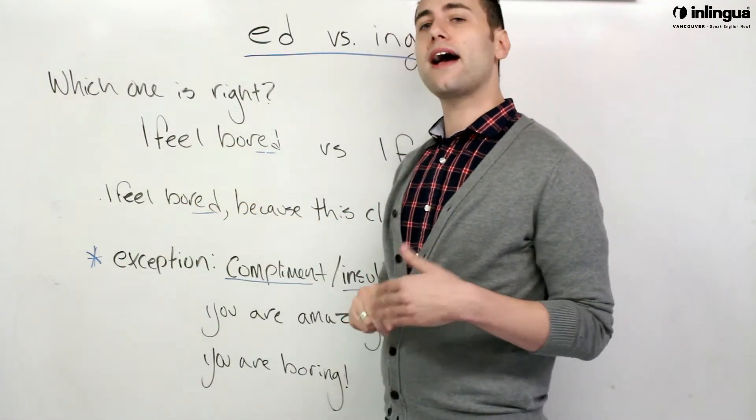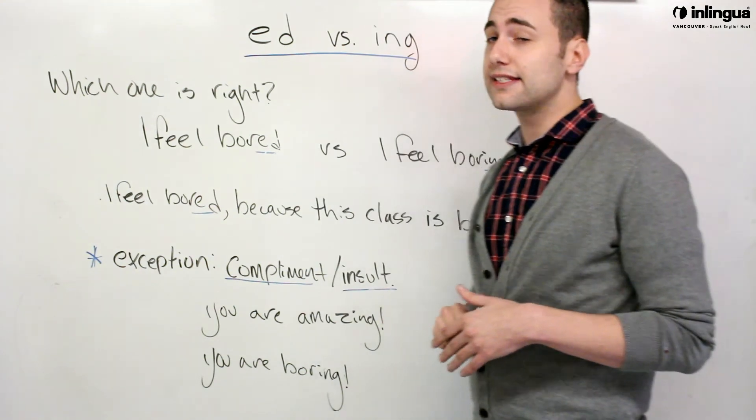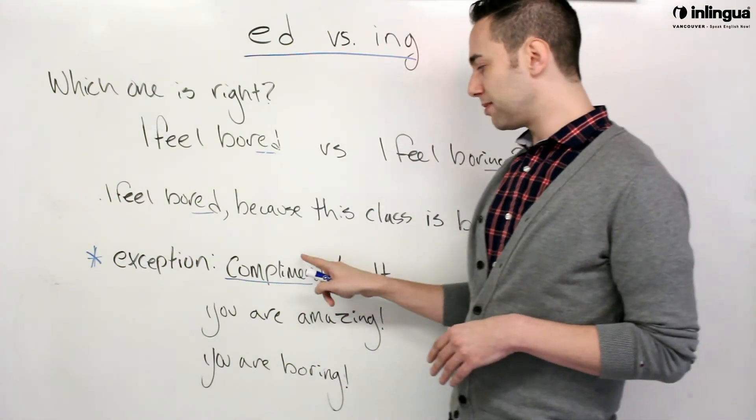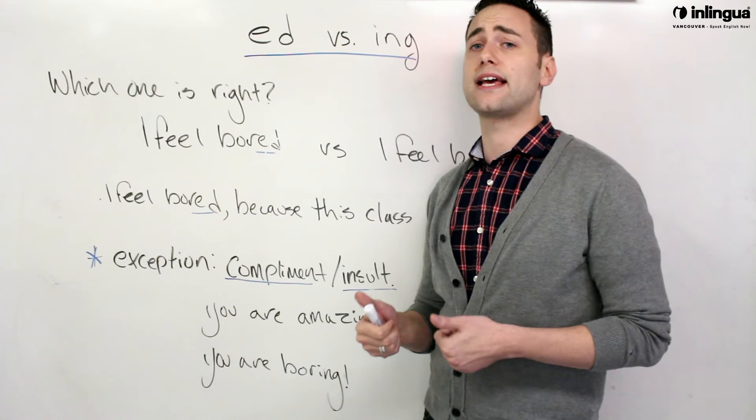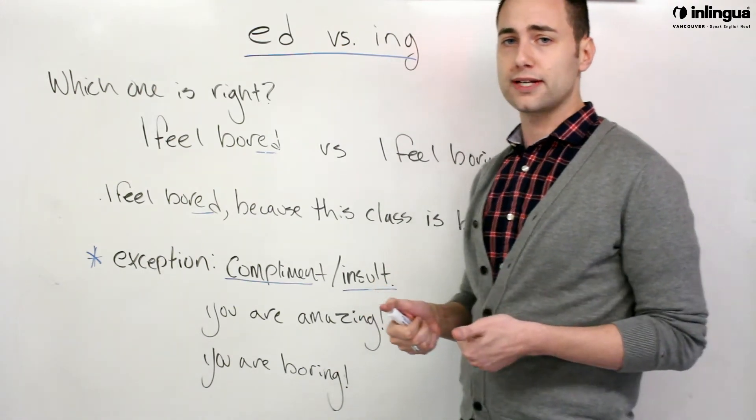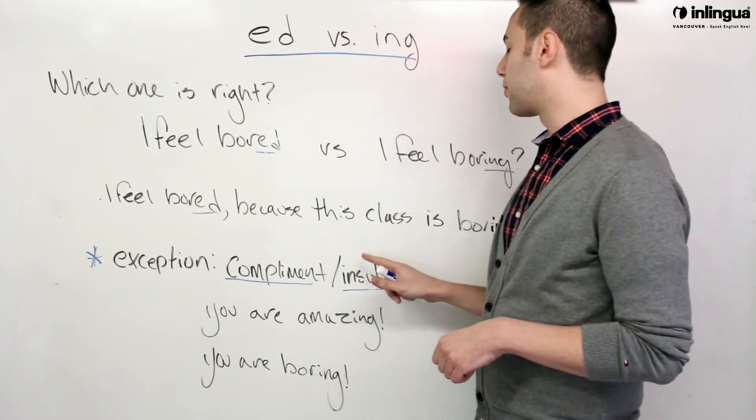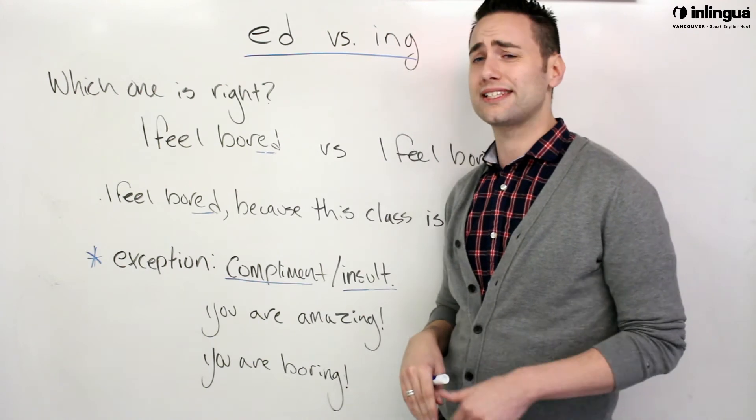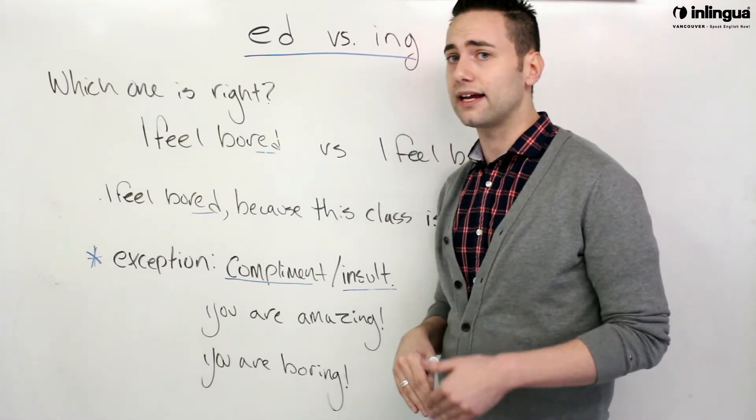We have some exceptions. These can be a little bit confusing. So a compliment, this is when you say something nice about a person, or an insult, this is when you say something negative or bad about a person.